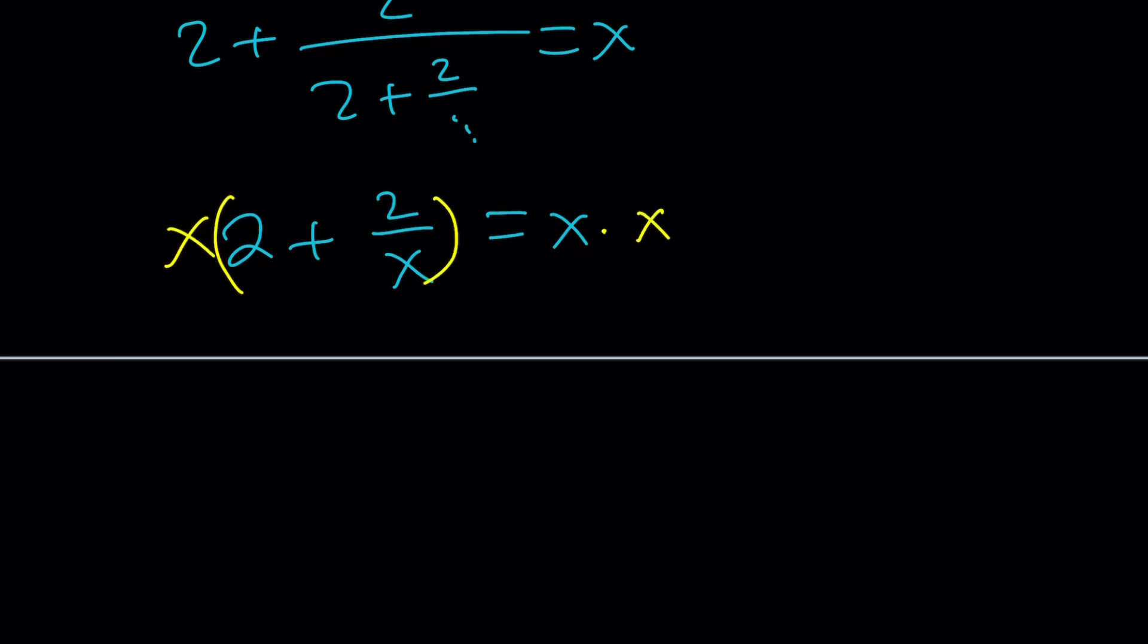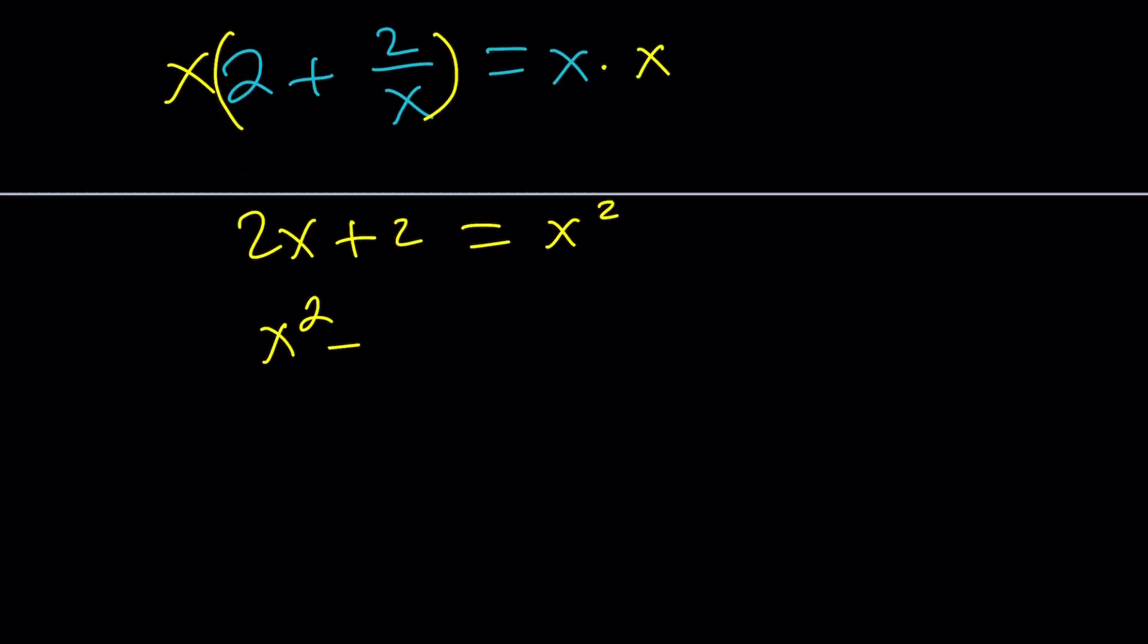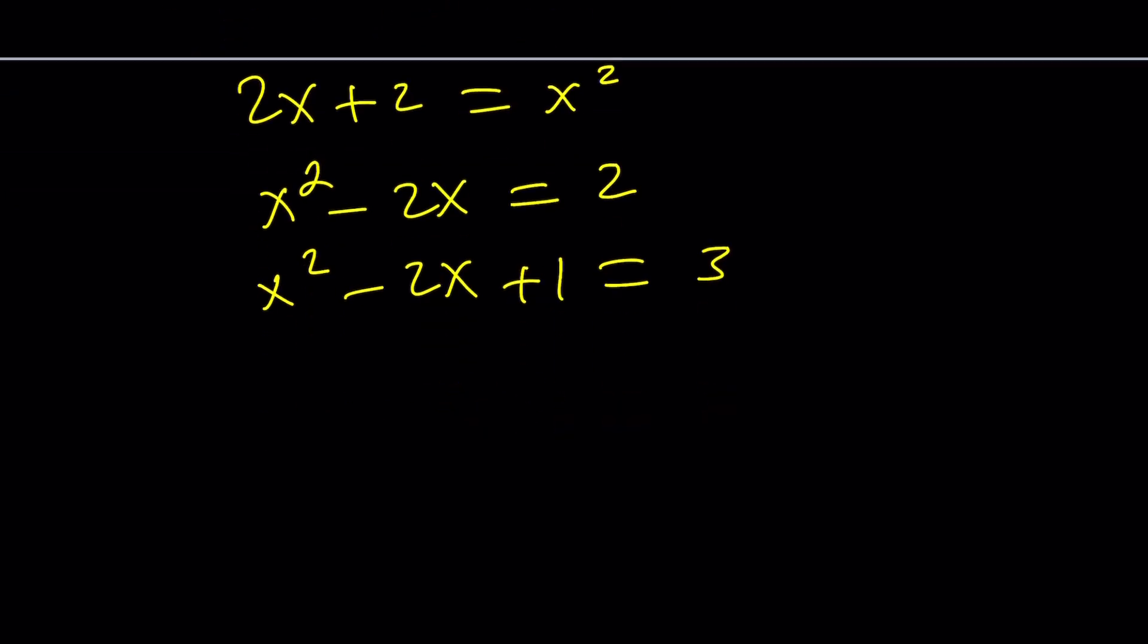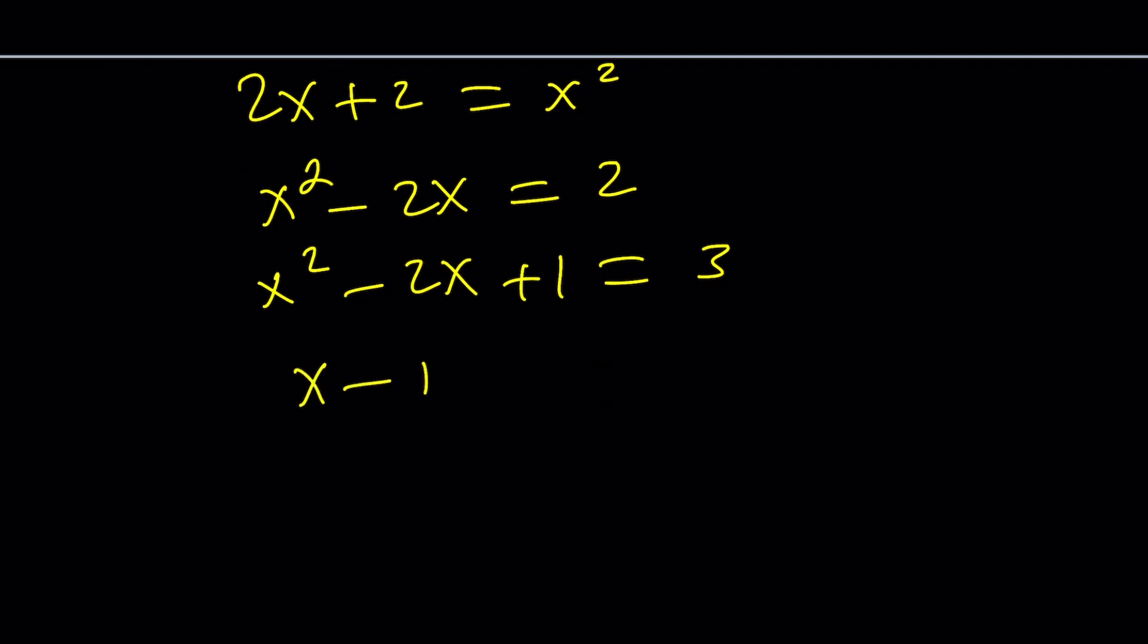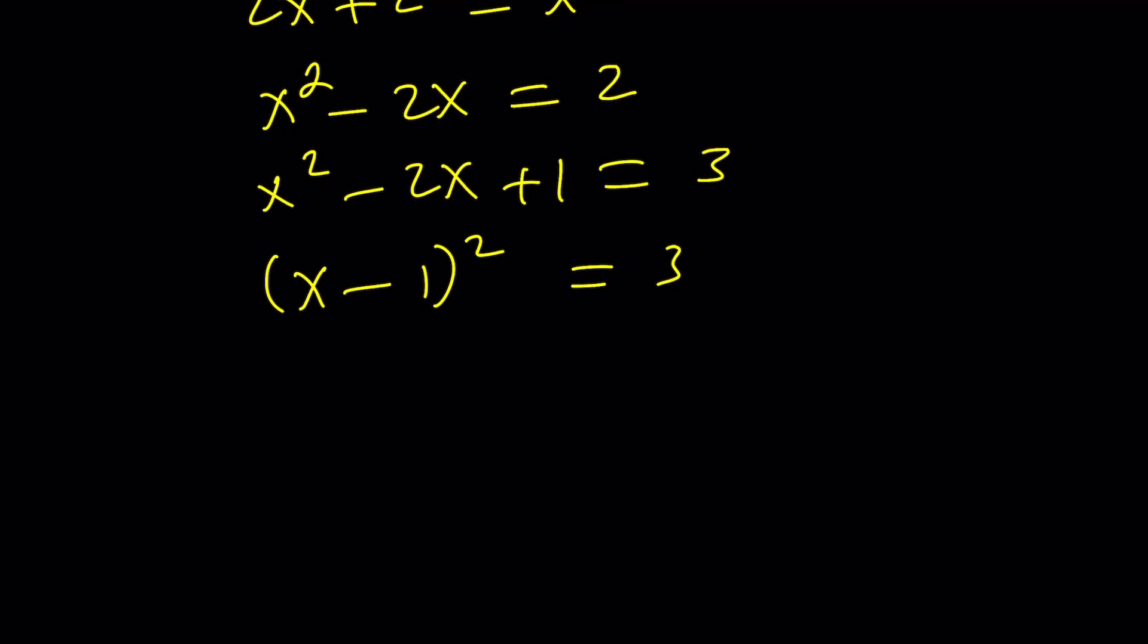So, this gives us 2x plus 2 equals x squared. And then you can complete the square or use the quadratic formula, whatever you want, to find the values of x because there's going to be 2 values. And then by adding 1 to both sides, we get the following.